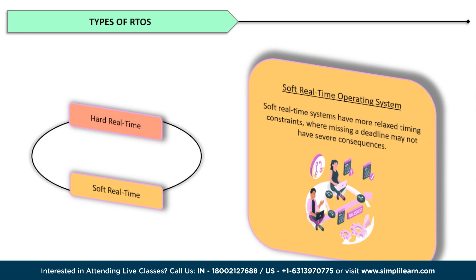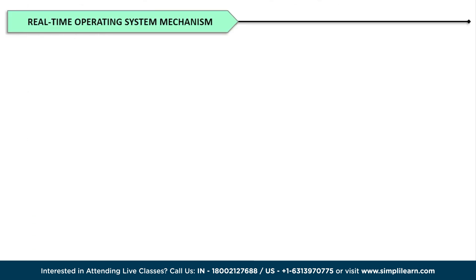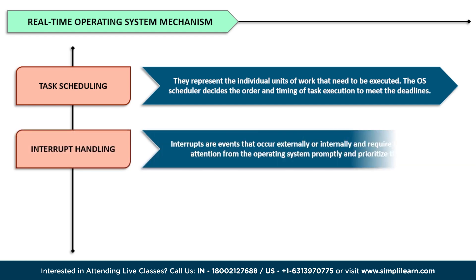Real-time operating systems achieve their deterministic behavior through various mechanisms. One key component is task scheduling — tasks are the building blocks of real-time systems, representing individual units of work that need to be executed. The OS scheduler decides the order and timing of task execution to ensure deadlines are met.